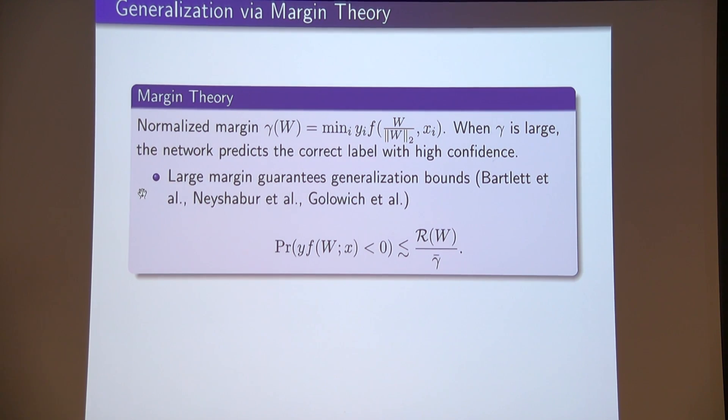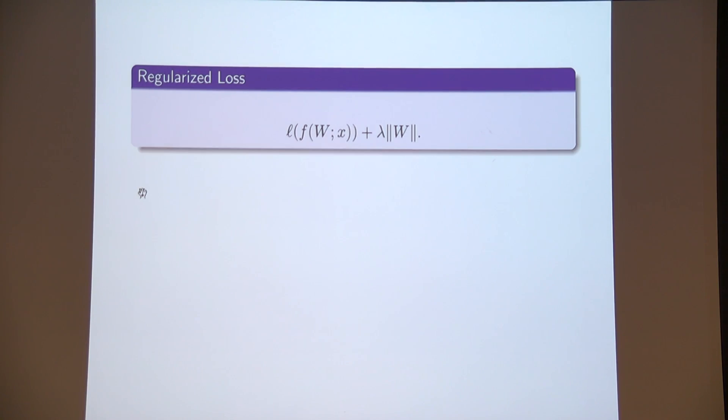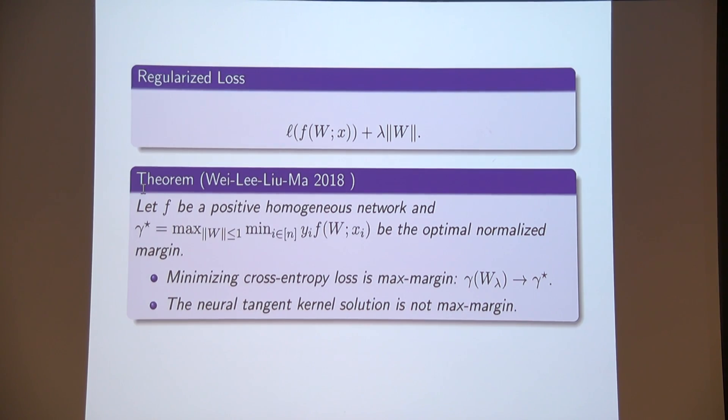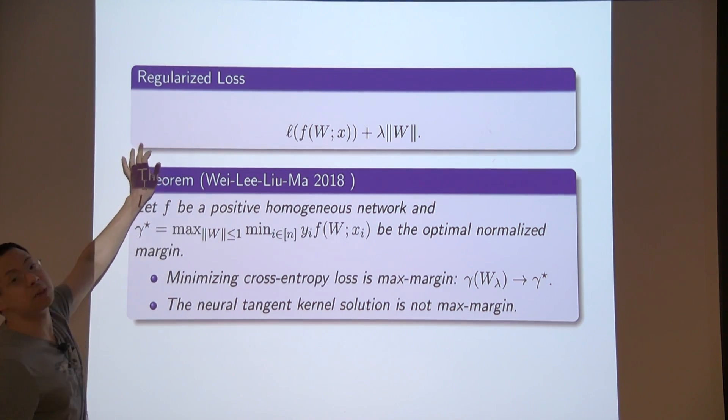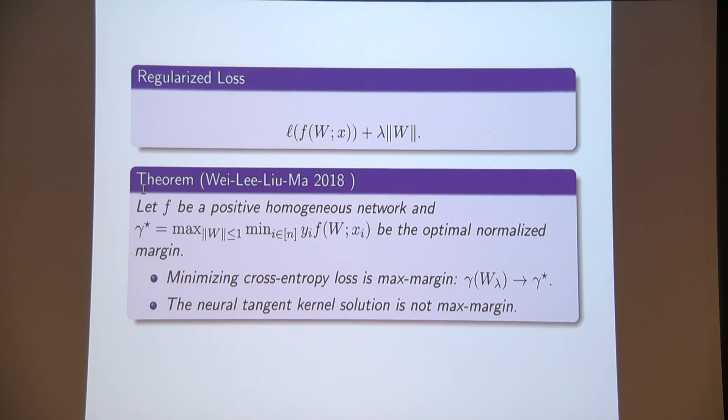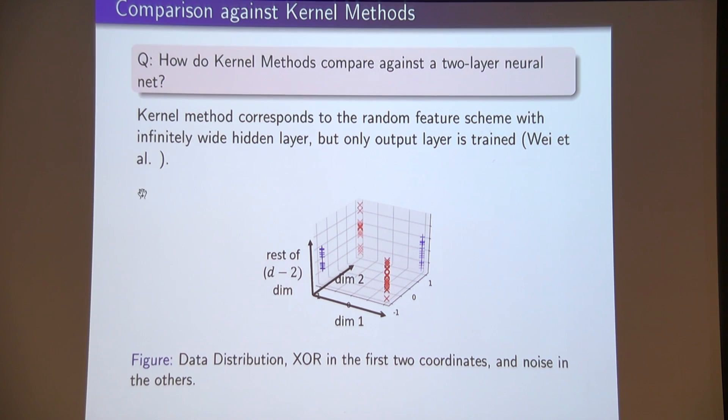It's well known work by Bartlett that if you can find things of low norm that classify well, your generalization is also bounded by a Rademacher complexity divided by the margin. This is all well known. So the real question is, do you actually get a large margin? What we proved is that if you solve a global minimizer of this, you do get large margin. The margin converges to the optimal margin and the NTK solution, the solution given by the kernel, is not maximum margin. If you do gradient descent when lambda equals zero, you do bad, potentially bad. You get this kernel method, which at least in some cases is quite bad. If you could get a global minimum of this, you do well. You cannot always expect to get a global minimum of a regularized loss, but we can in some certain cases.